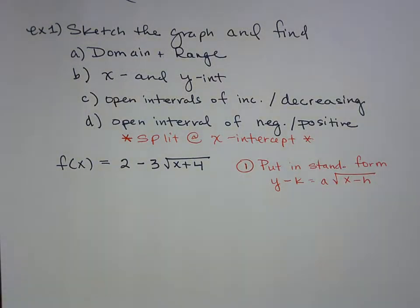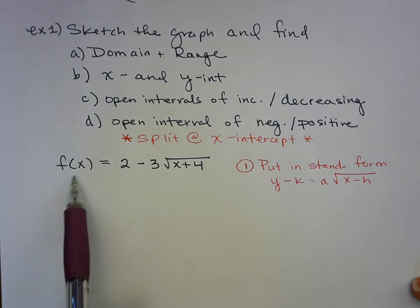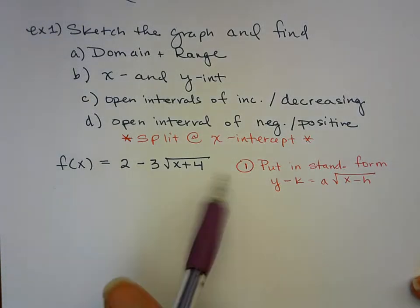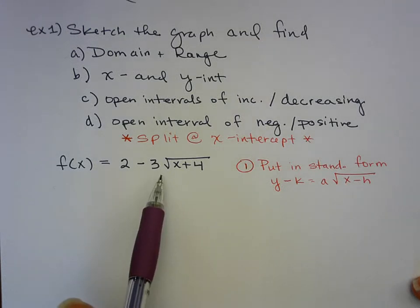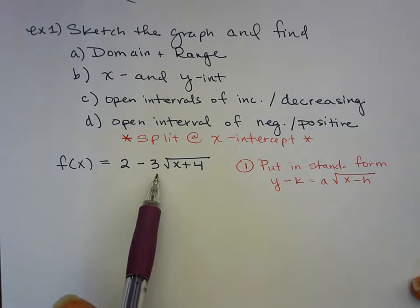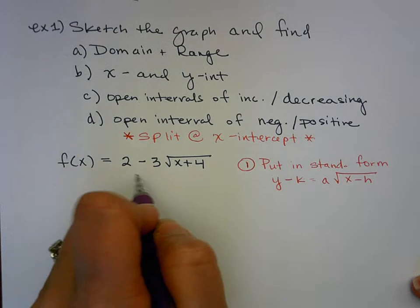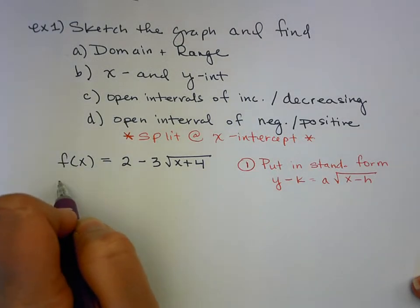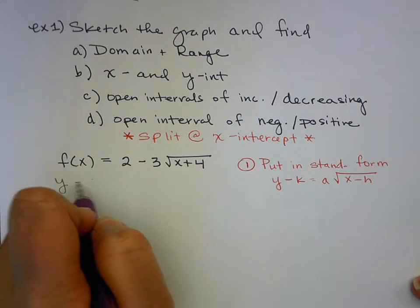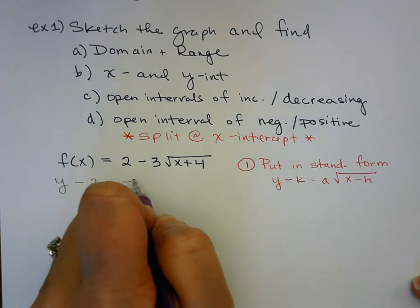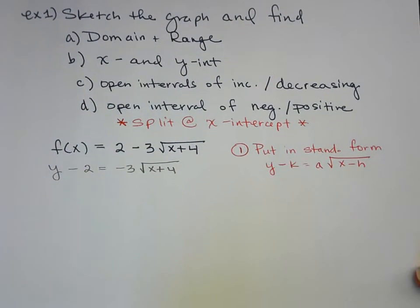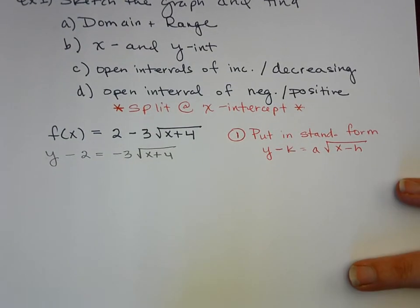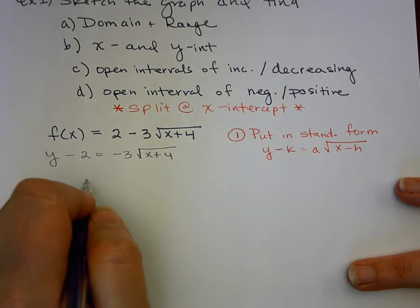So for us, do I move the three over, or am I going to move the two over? Which one is the straggler number, which one is the stretch? The stretch is negative three, so that means I need to move the two over. I'm going to subtract two to the other side and rewrite f of x as y. So that will be y minus two equals negative three times the square root of x plus four. We already know how to graph, so we're going to find our vertex.